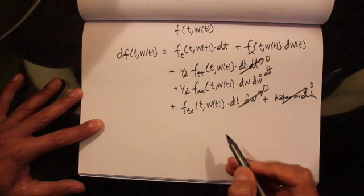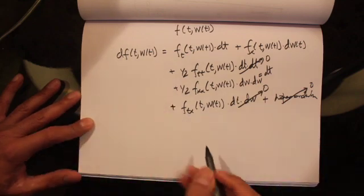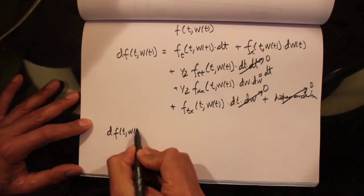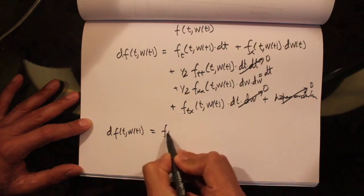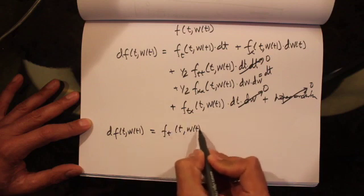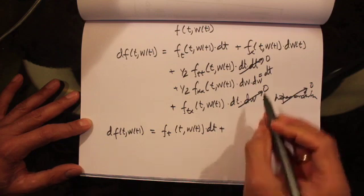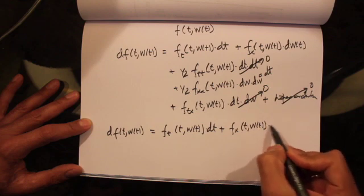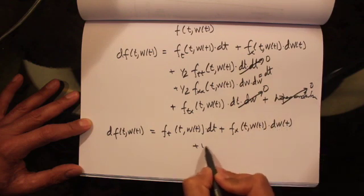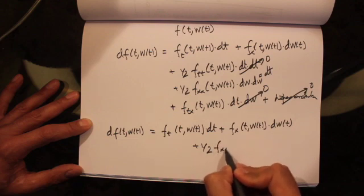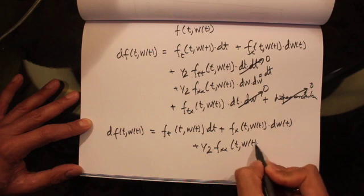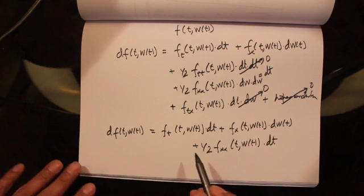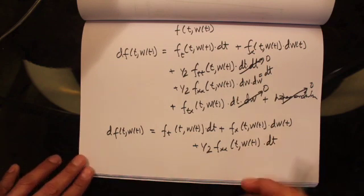All higher order terms also go to zero. So the equation can be written as: df(t, W_t) = f_t(t, W_t) dt + f_x(t, W_t) dW_t + (1/2) f_xx(t, W_t) dt.